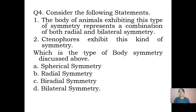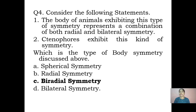Fourth question: consider the following statements and identify the type of body symmetry. Statement one: the body of animals exhibiting this type represents a combination of both radial and bilateral symmetry. Statement two: ctenophores exhibit this kind of symmetry. From the statements we can identify this as biradial symmetry — ctenophores are indeed the example for biradial symmetry. It is a straightforward question.